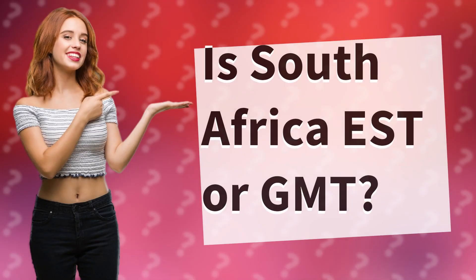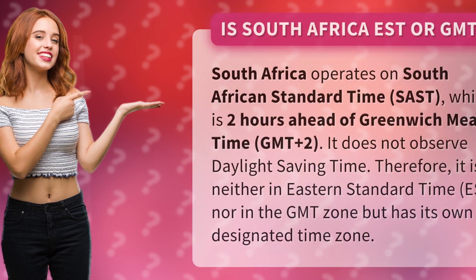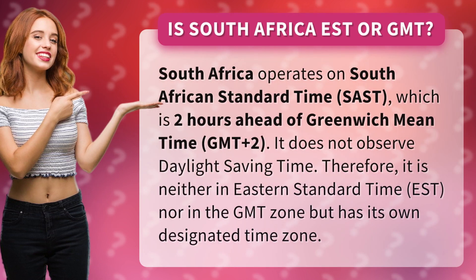Is South Africa EST or GMT? South Africa operates on South African Standard Time (SAST), which is two hours ahead of Greenwich Mean Time, GMT+2. It does not observe daylight saving time. Therefore, it is neither in Eastern Standard Time (EST) nor in the GMT zone, but has its own designated time zone.